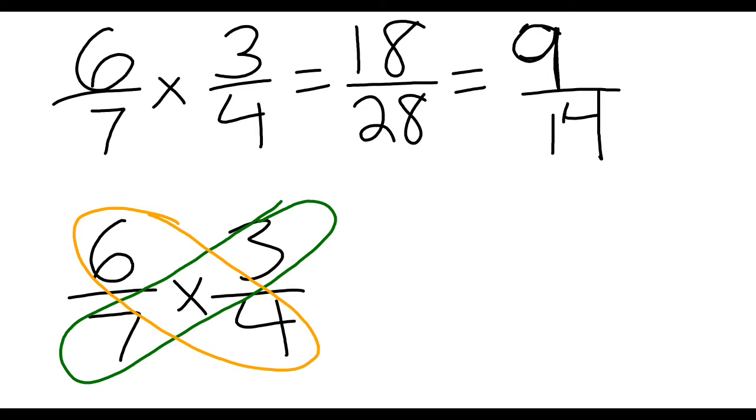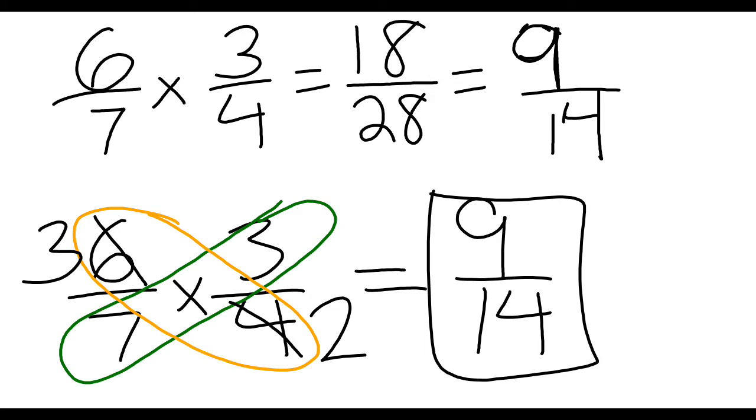There's nothing that both of them can be divided by, but both 6 and 4 can be divided by 2. 6 divided by 2 is 3, and 4 divided by 2 is 2, and then you can multiply across. 3 times 3 is 9, 7 times 2 is 14, and there's your final answer.